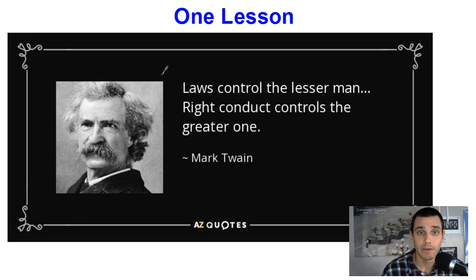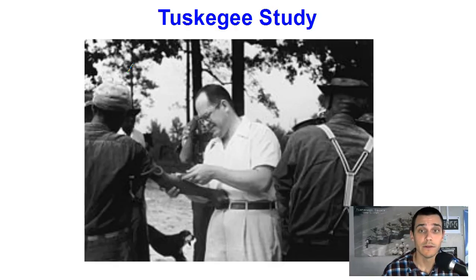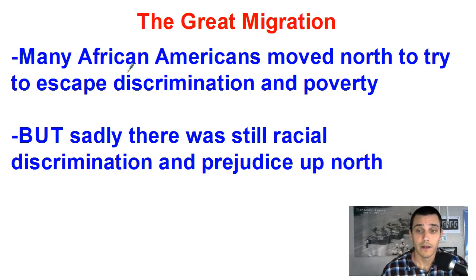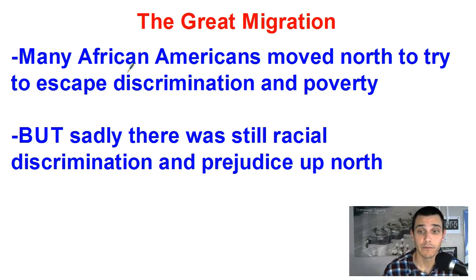The lesson, as always — here it is from Mark Twain: 'Laws control the lesser man. Right conduct controls the greater one.' All this stuff was legal — the Tuskegee study, the sterilization, the eugenics, the Jim Crow laws, the segregation — that was all legal. But that doesn't make it right just because it's a law. What makes something right is if it's right, and just because something's a law doesn't mean it's okay.